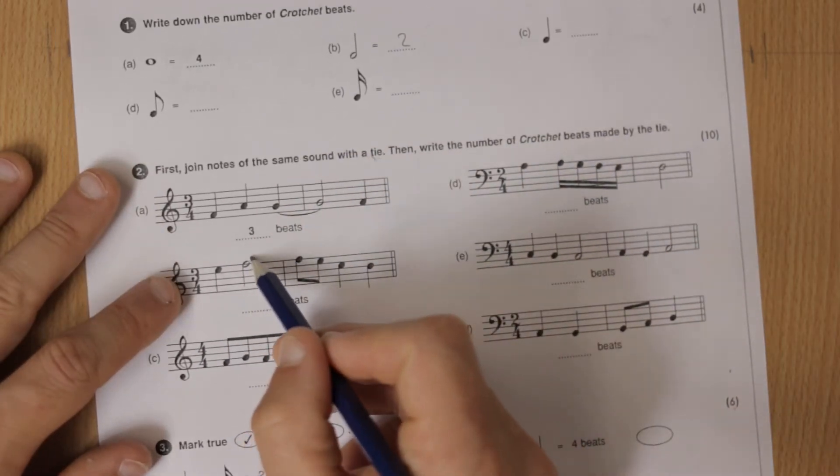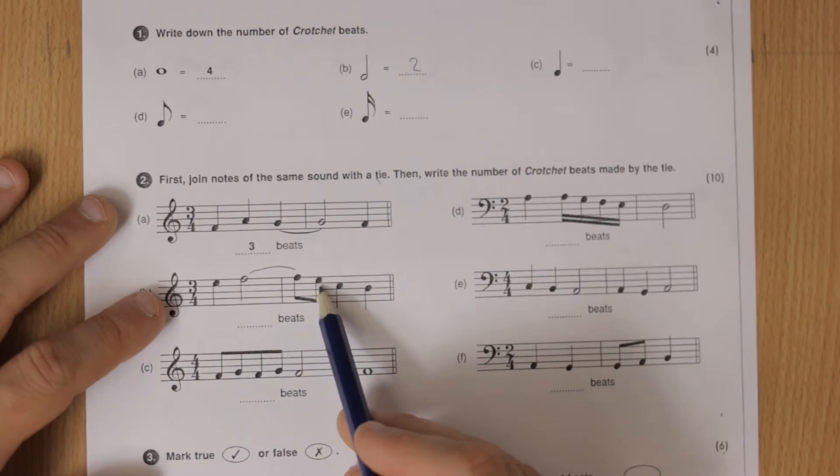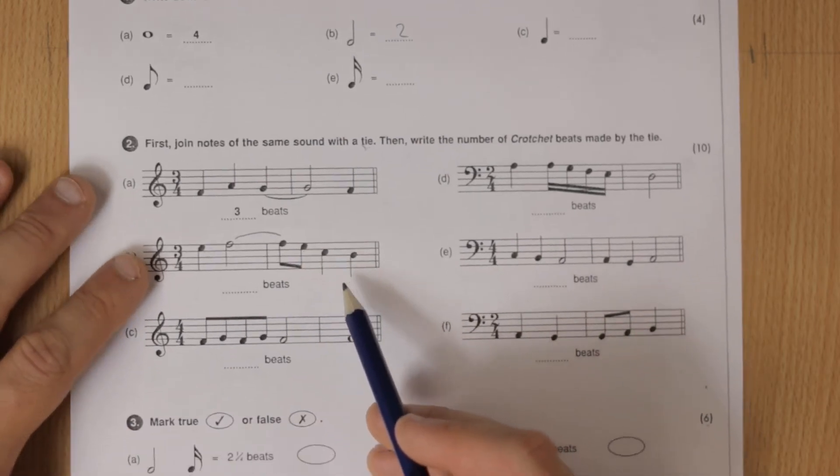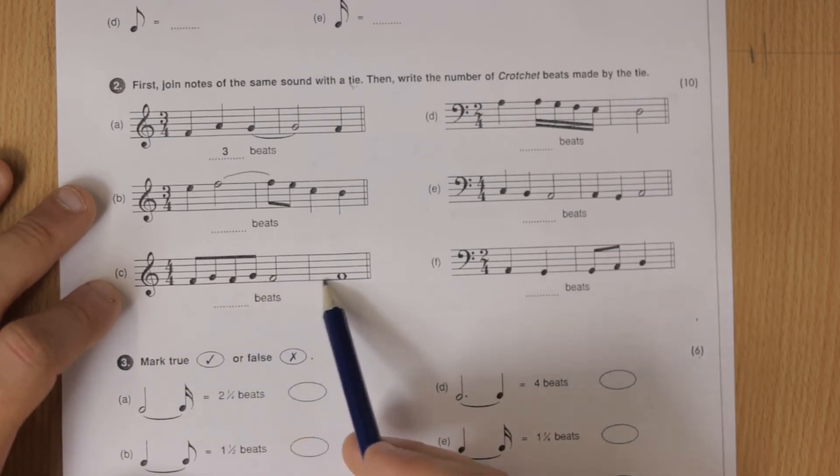So these are coming down so we'll draw a tie going to there and then this is down one, down two, down one. So that's the only one there. Up one, down one, up one, down one, same—so these are the same, we'll do a tie there.